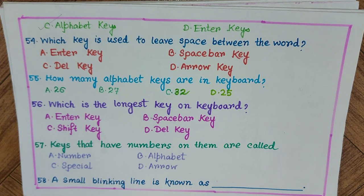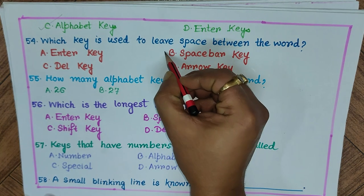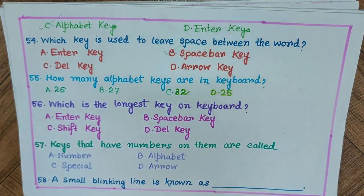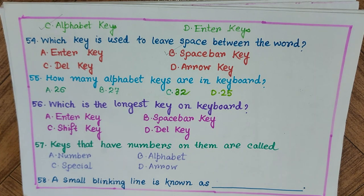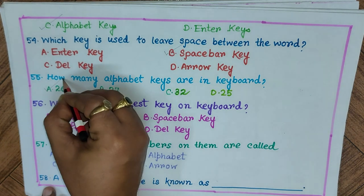Question 54: Which key is used to leave a space between words? A) enter key, B) spacebar key, C) del key, D) arrow key. The answer is B) spacebar key. Question 55: How many alphabet keys are on a keyboard? A) 26, B) 27, C) 32, D) 25. The answer is A) 26.